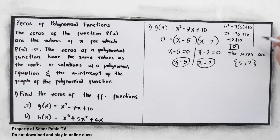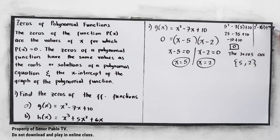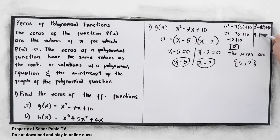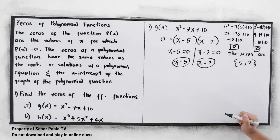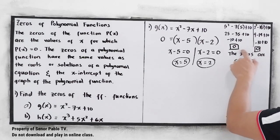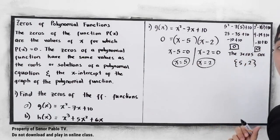And the other one: if x is 2, so we have 2 squared minus 7 times 2 plus 10. 2 squared is 4, negative 7 times 2 is negative 14, plus 10. So 4 minus 14 is negative 10, plus 10, gives us 0. So, if that's the case, therefore your answers are correct.